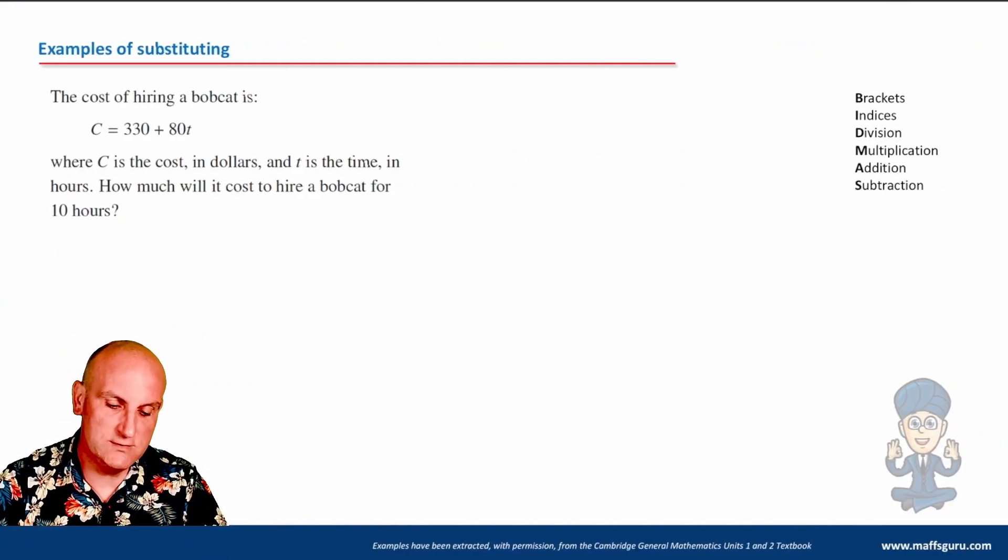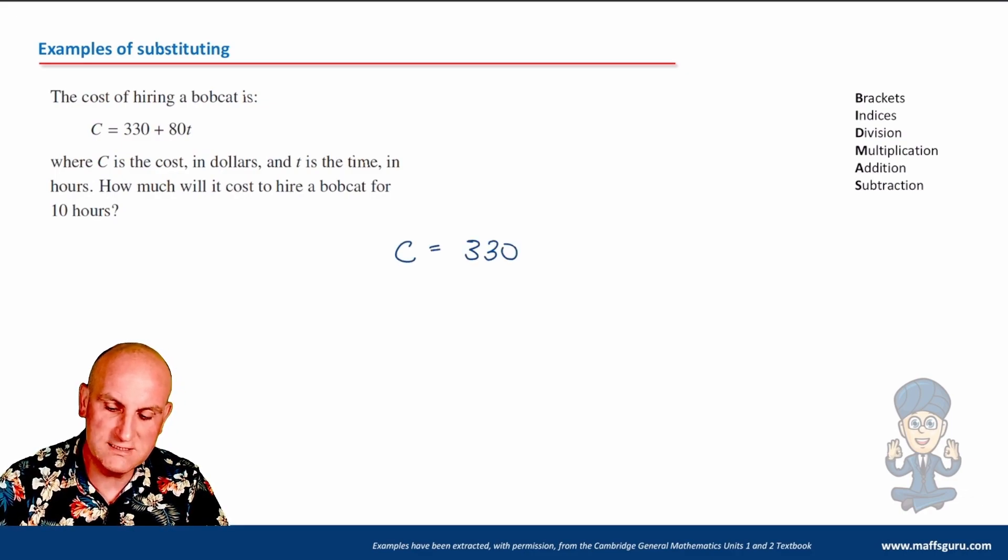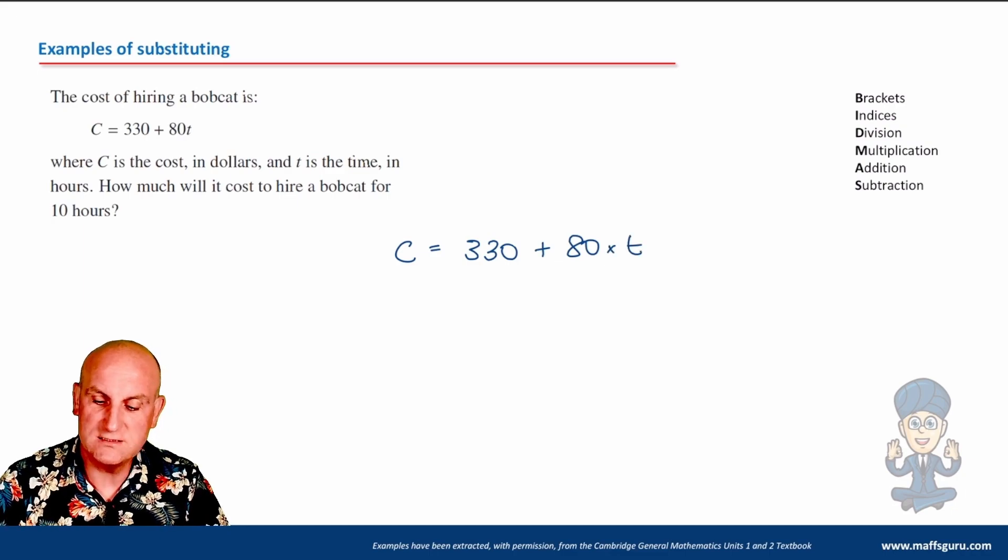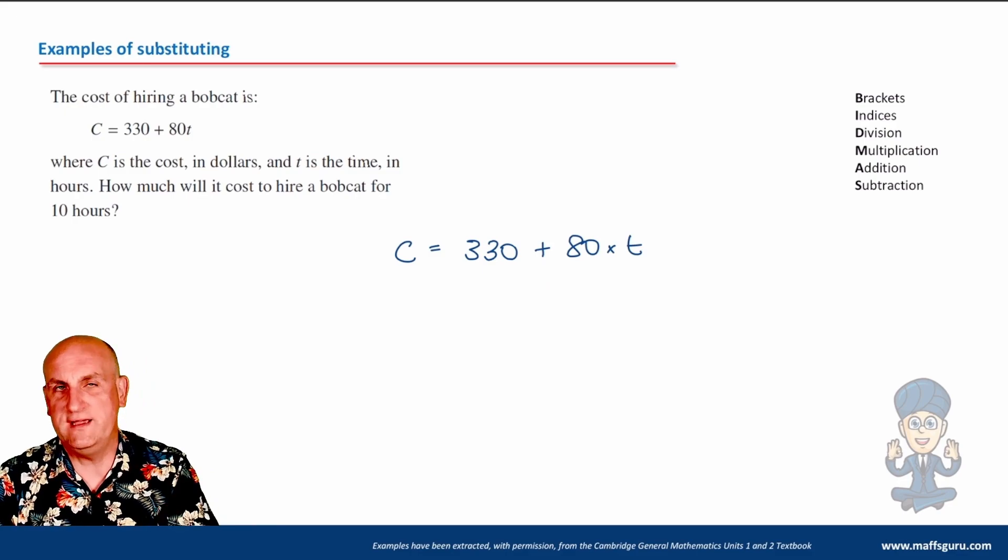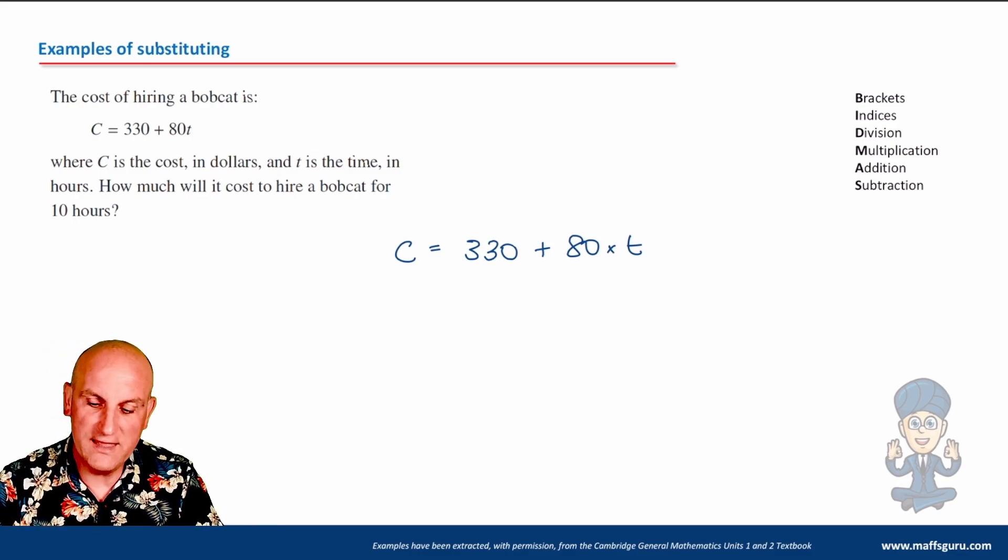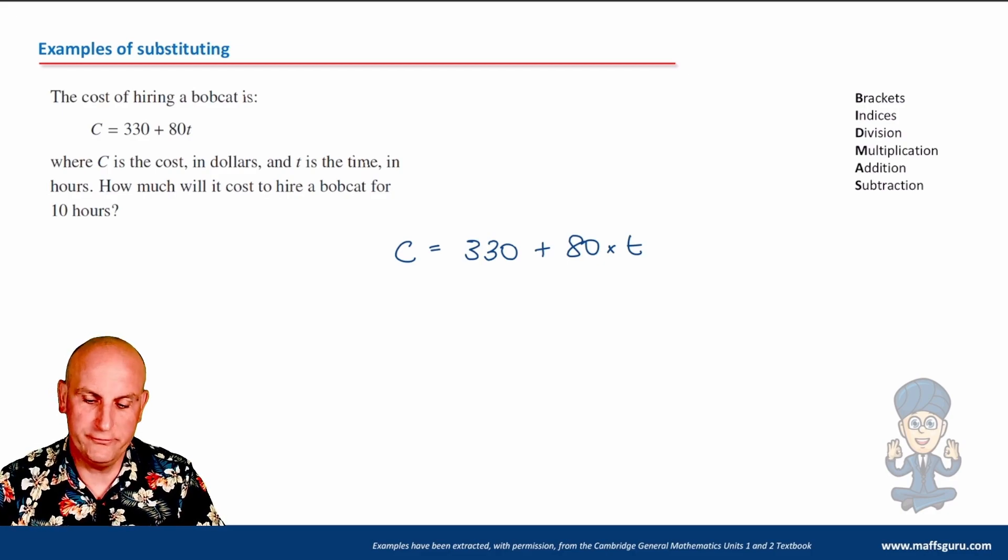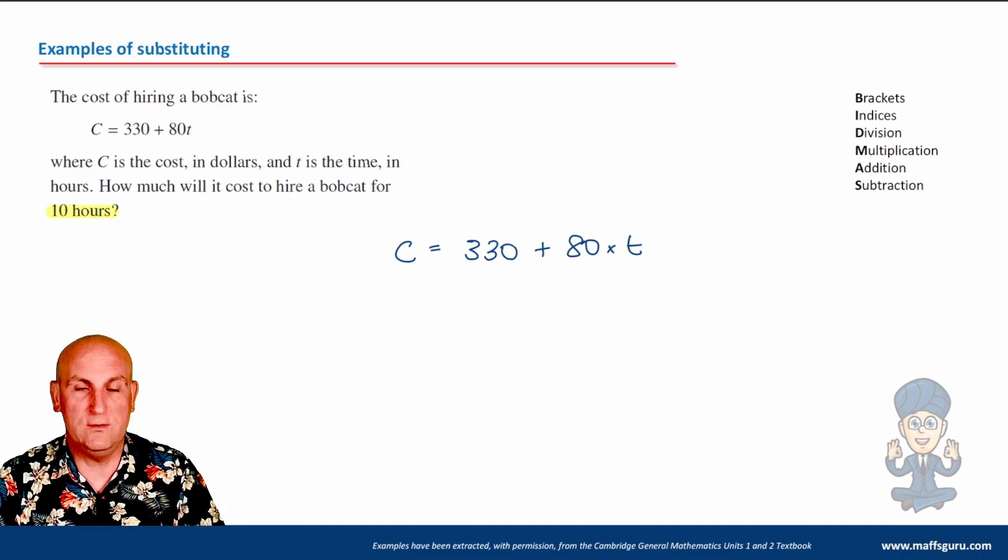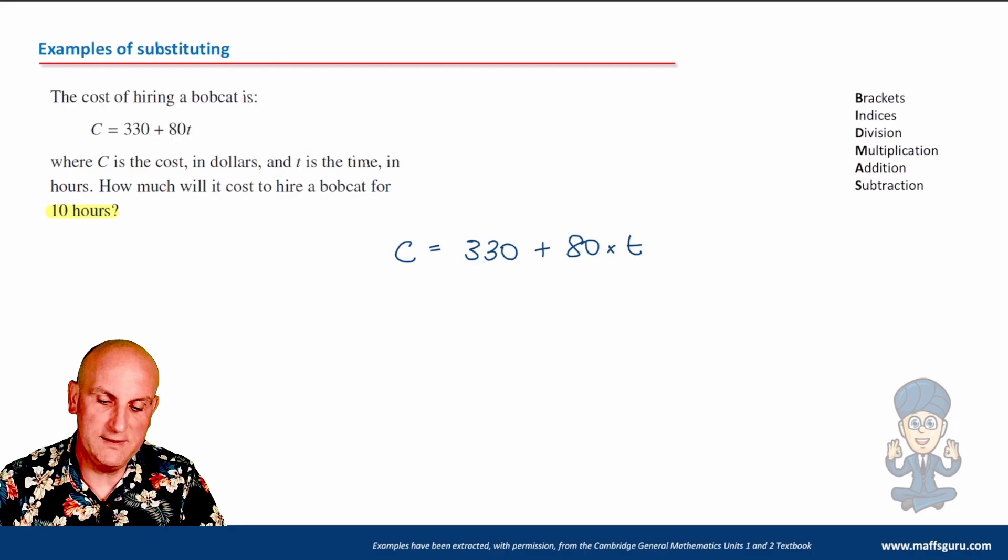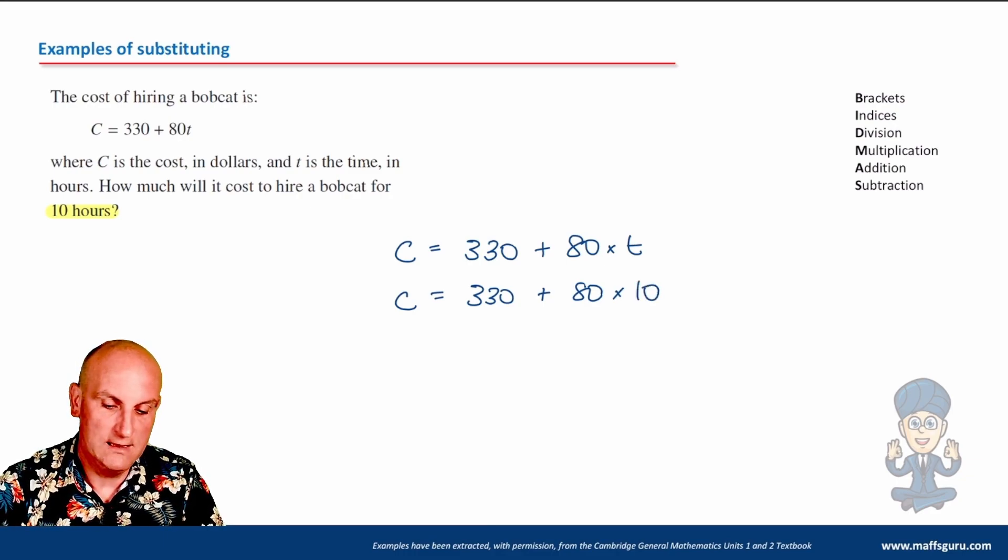Another example, the cost of hiring a Bobcat is C equals 330 plus 80T. Well, I know that's 80 times by T. Lots of things you hire have a fixed cost. You're going to pay for them regardless of how long you use them. And then you're going to pay an hourly rate. How much will it cost to hire a Bobcat for 10 hours? Well, when you see 10 hours, they're giving you a time. So that means where I am seeing the value of T, I'm going to put 10 in its place. So 330 plus 80 times T, I'm going to replace for 10.